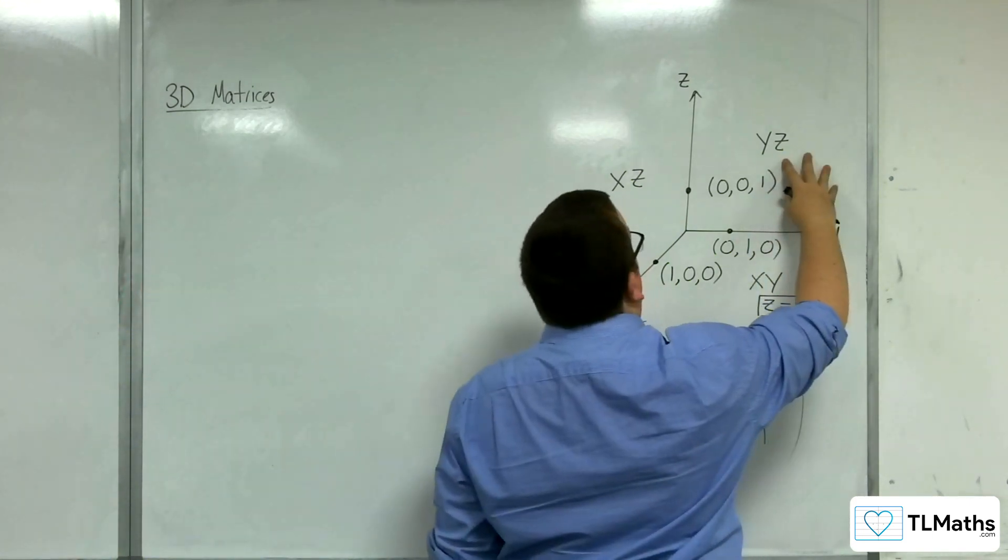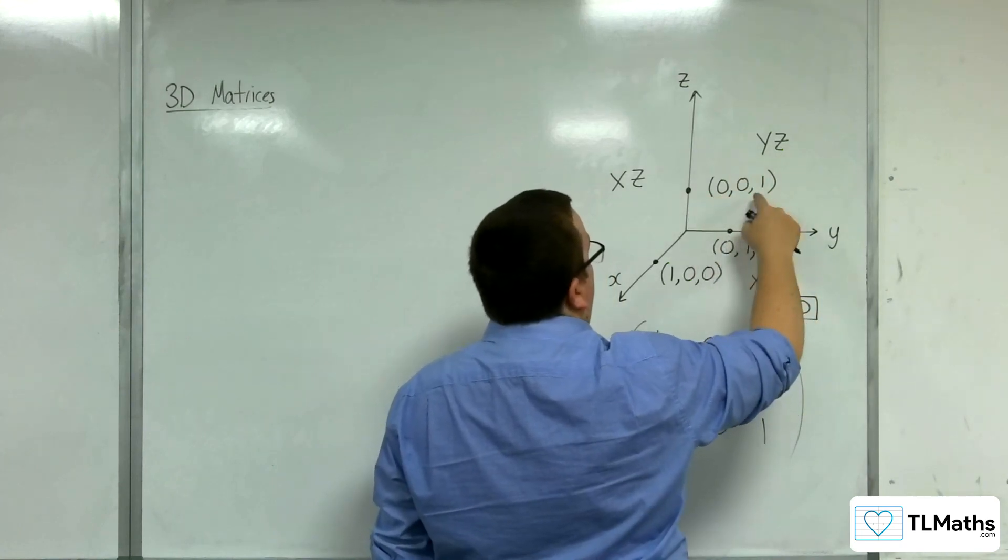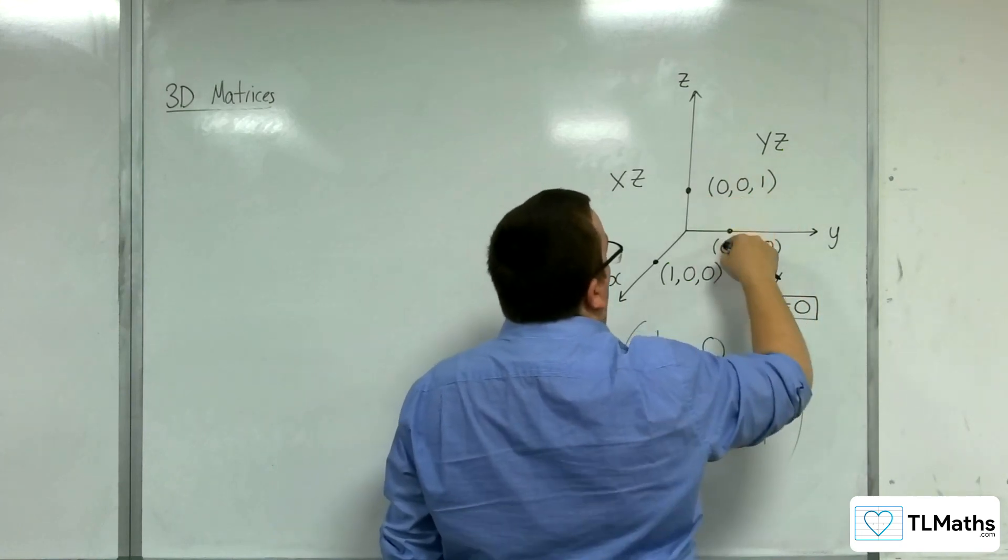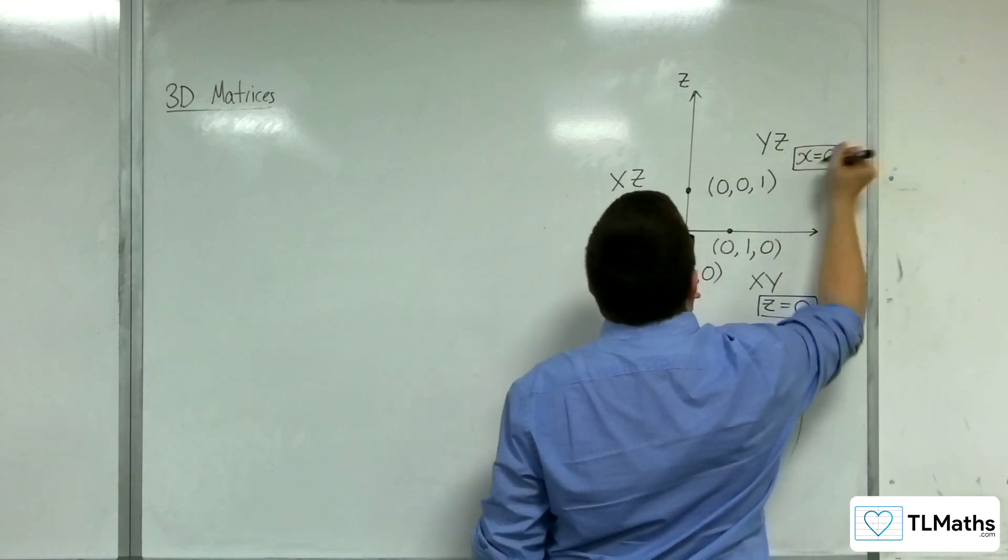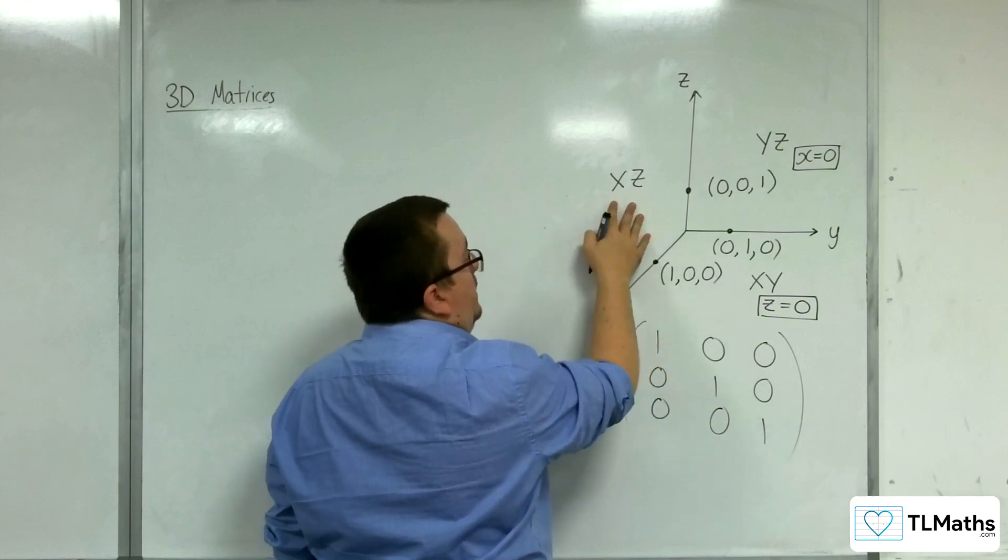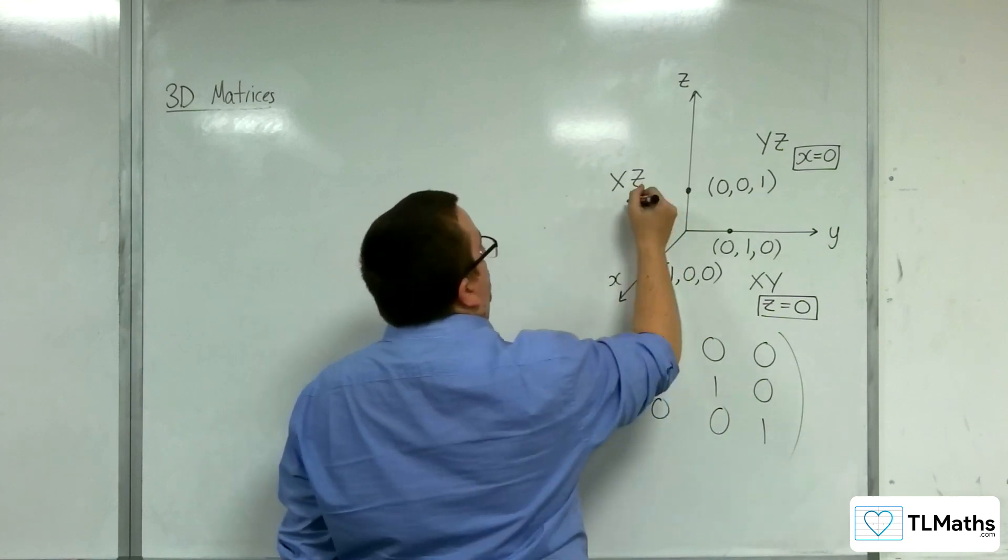Likewise, for the yz plane, you'll notice that these two points are on the yz plane, and x is always 0. And on the xz plane, these two points, y is always 0.